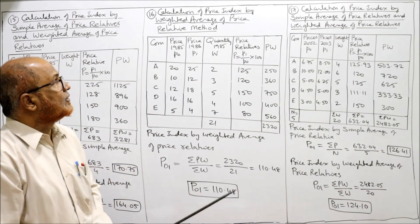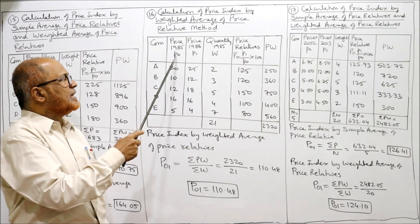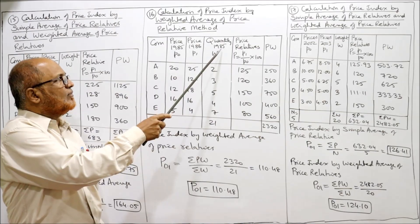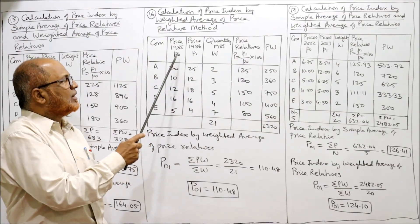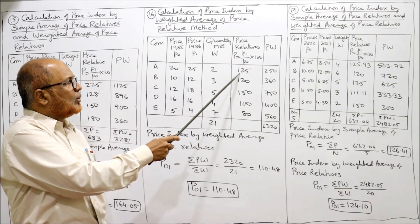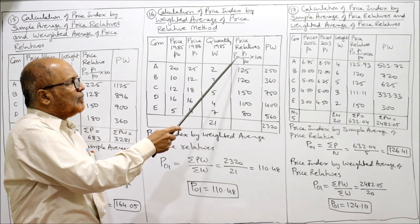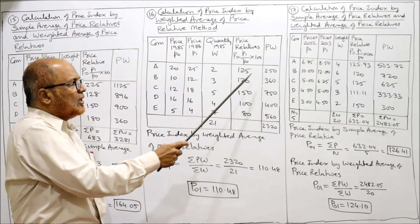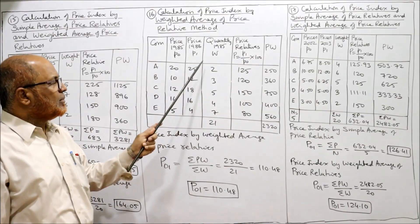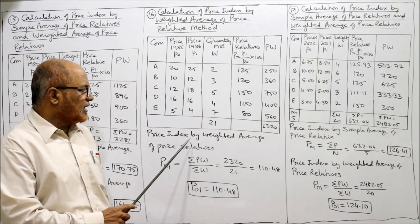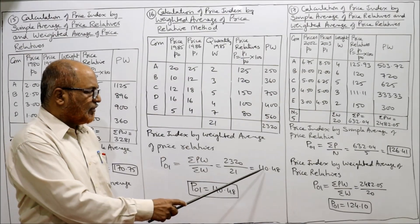We have to calculate the weighted index. Commodities are given; 1985 is the base year price P0; 1986 is the current year price P1; quantity of 1985 is taken as weight. We calculate price relative just like the previous problem: P1 divided by P0 into 100. For example, 25 by 20 into 100 = 125; 12 by 10 into 100; 18 by 12 into 100. Then multiply P into W: 125 into 2, 120 into 3, 150 into 5. Take the total: summation PW = 2,320 and summation W = 21. Substitute in the formula: summation PW divided by summation W = 2,320 divided by 21.